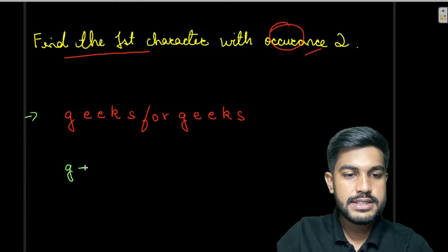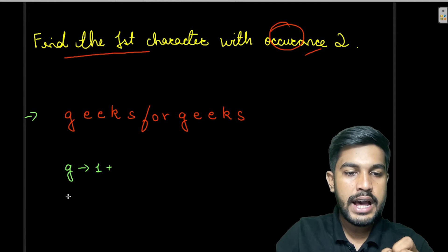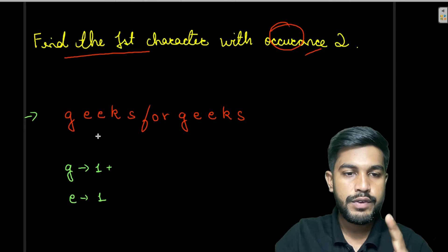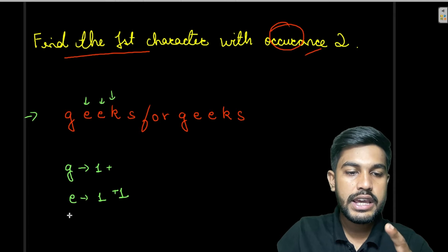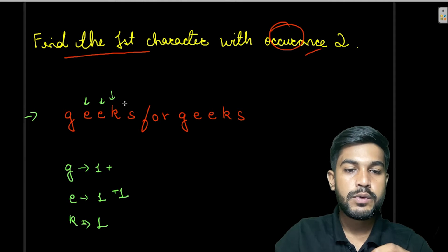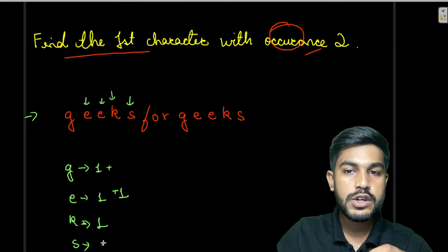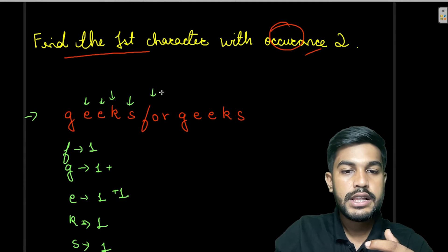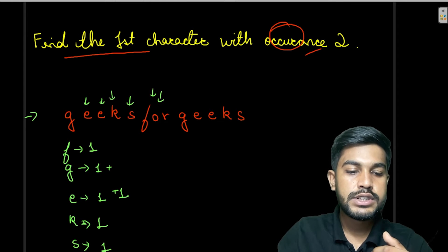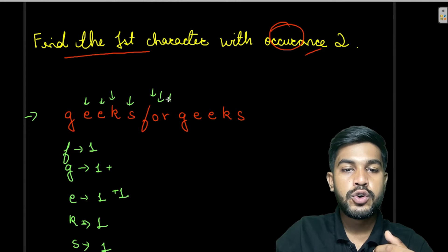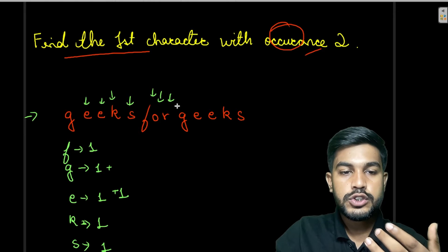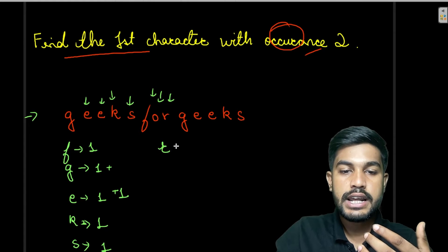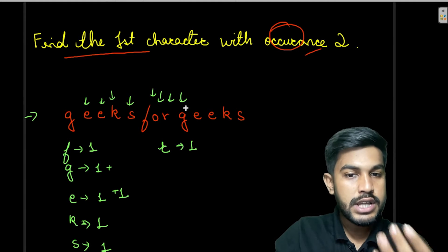So we know that 'g' here has count one. Then 'e' — we've encountered it once, then the second 'e' so 'e' gets count two. Then 'k' is not there so we initialize 'k' with one, then 's' equals one, 'f' equals one, 'o' equals one, 'r' equals one. Then we come across 'g' again.